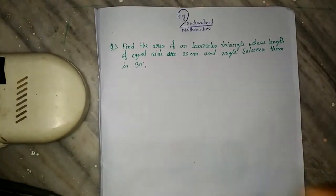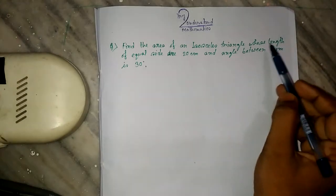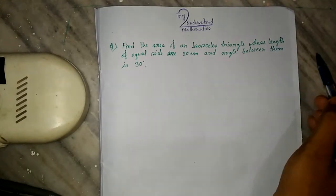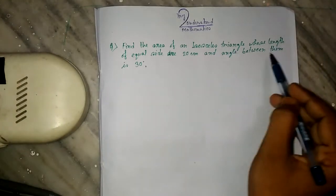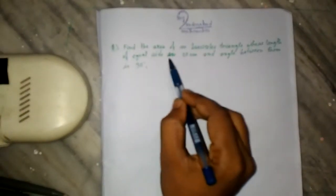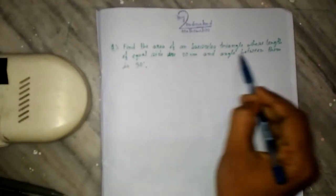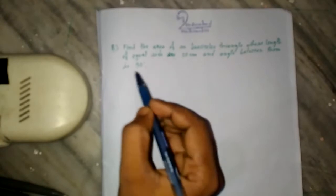This is my channel. Try to understand. Let us take a problem: find the area of an isosceles triangle whose equal sides are 20 cm and the angle between them is 30 degrees.